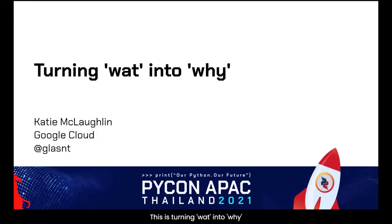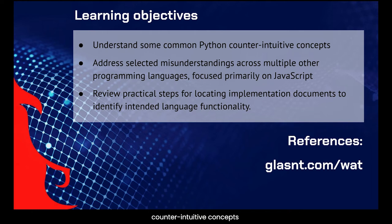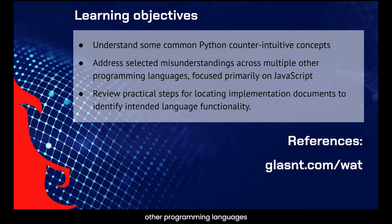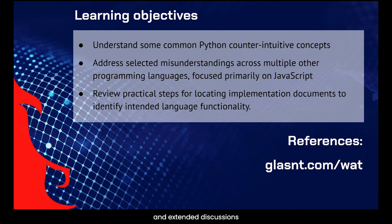This is turning 'what' into 'why.' The learning objectives for this presentation include understanding some common Python counterintuitive concepts, addressing selected misunderstandings across multiple other programming languages focused primarily on JavaScript, and reviewing practical steps for locating implementation documents to identify intended language functionality. All references, including replication steps and extended discussions, can be found at glasnt.com.